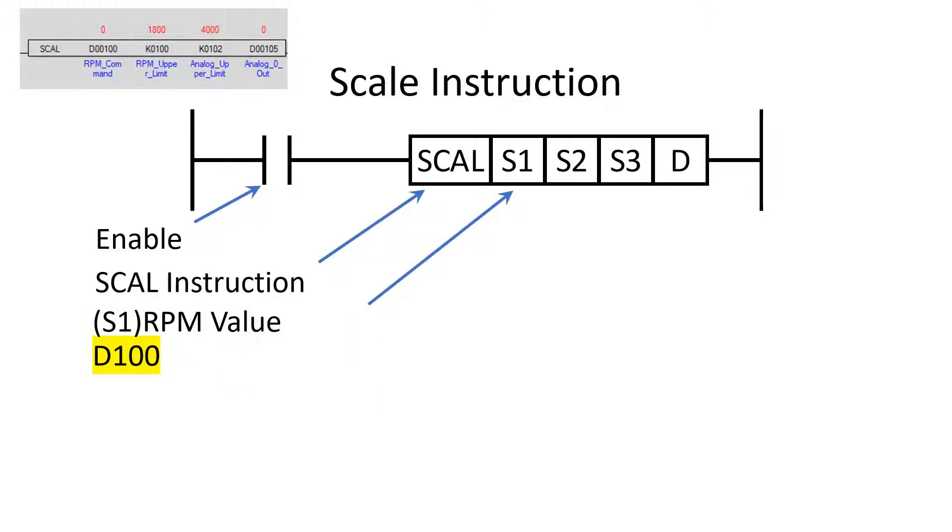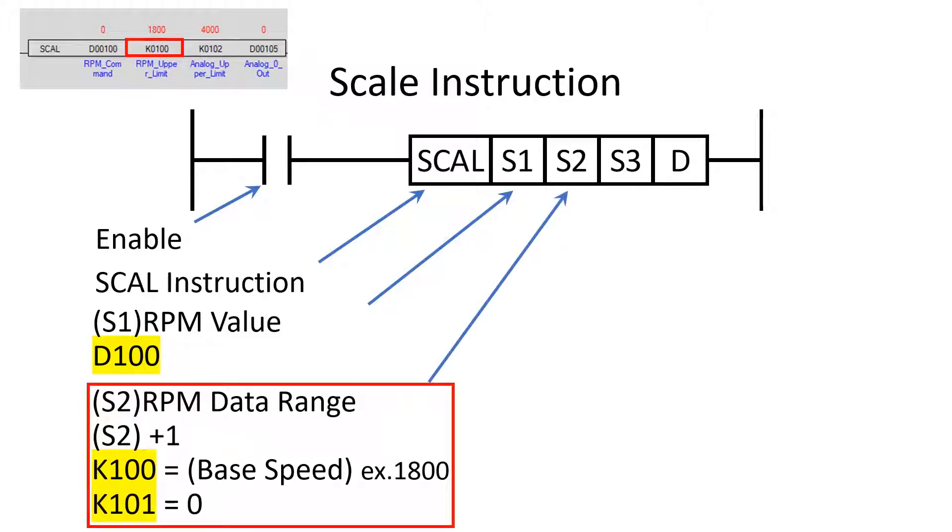Operands S2 and S3 are stored in K memory as this is retentive memory. The S2 operand is the memory location of the motor's base speed. In this example it is 1800. S2 plus 1 is the memory location for the lower value of the motor's base speed. The two S2 locations are K100 and K101 for a range of 0 to 1800.